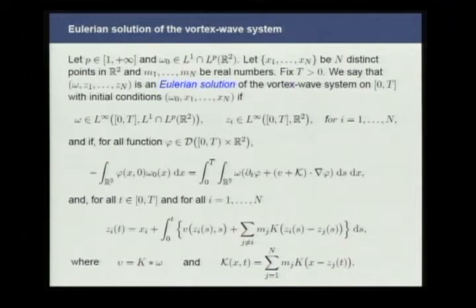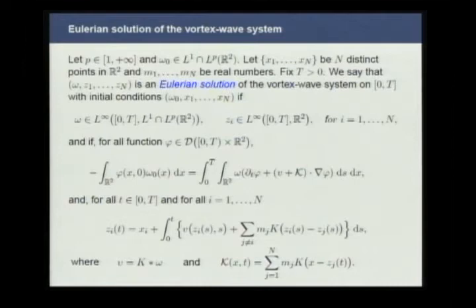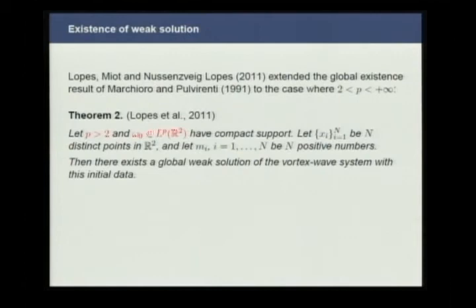Lagrangian solutions of the vortex wave system are very restrictive because they require the existence of a flow. So we can define a weaker notion of solution — solutions in the distribution sense. This is the definition of the Eulerian solution, where there is no requirement on the existence of a flow, allowing one to deal with a much larger class of solutions. In 2011, Lopes, Miot, and Nussenzveig Lopes extended the result from Marchioro and Pulvirenti: if omega_0 belongs to L^p with p bigger than 2 with compact support, then there exists an Eulerian solution of the vortex wave system with this initial data.